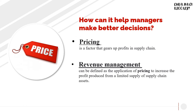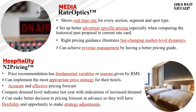Next, how can revenue analytics help managers make better decisions? Better decisions can be determined as it improves business profitability to achieve the company's goal. First, revenue analytics helps managers in pricing. Pricing is a factor that generates profit in the supply chain. Second, it helps managers in revenue management. Revenue management can be defined as the application of pricing to increase the profit produced from a limited supply of supply chain assets. I would like to explain how revenue analytics software helps managers make better decisions in four sectors, which are media, hospitality, passenger rail, and manufacturing and distribution.